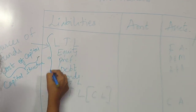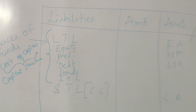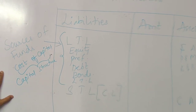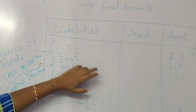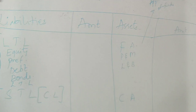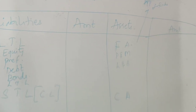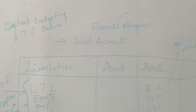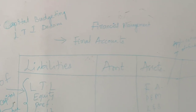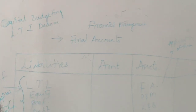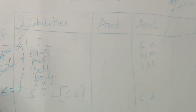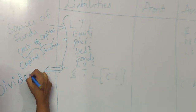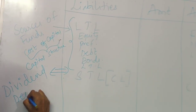So from sources of funds we are going to learn cost of capital and capital structure, whereas in application of funds on long-term fixed assets we will do capital budgeting or long-term investment decision making. Apart from this, we are also going to study about dividend decisions.